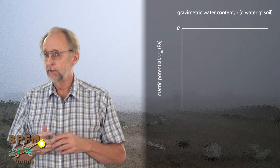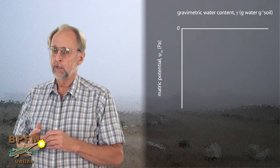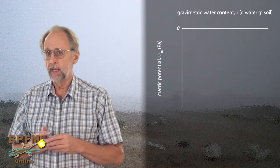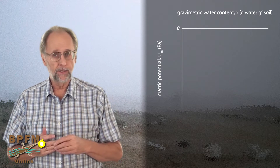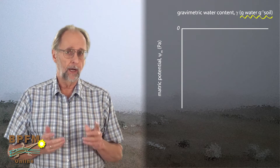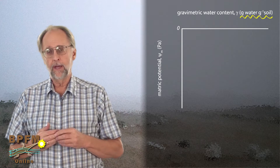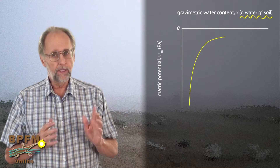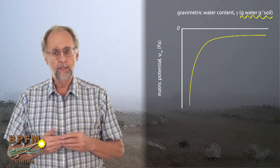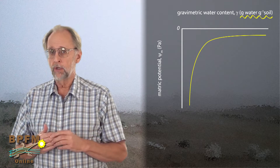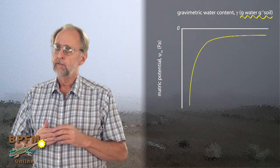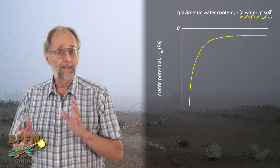Before we get to the actual demonstration, let's take a moment to review a fundamental relationship between matric potential and what's called the gravimetric water content of the soil. Gravimetric water content is simply the mass of water contained in a given mass of dry soil — you can think of it as a kind of soil water density, except it's a dimensionless number with units of grams water over grams soil, and it's often expressed as a percentage. Matrix potential is always negative, and drier soils have stronger matrix potentials. The effect of a change of water content is dramatically different at different water contents, however.